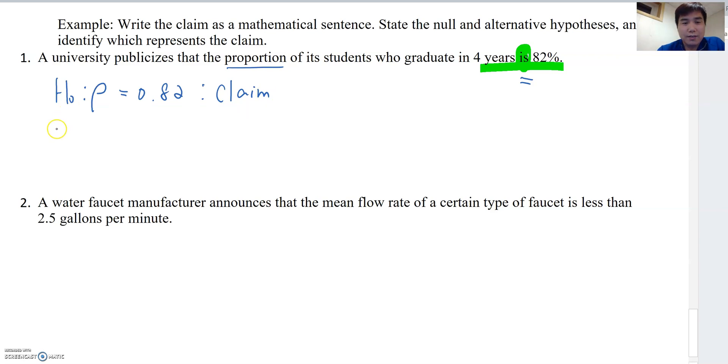Then what's Hₐ? The proportion is not equal to 0.82 basically. So that's the hypothesis setting for number one.